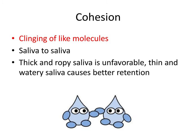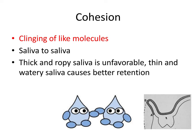The flip side is cohesion — clinging of like molecules together. The mnemonic here: cohesion, clinging, and like all start with consonants. This would be saliva-to-saliva — the water molecules in saliva engaging in cohesion forces. Importantly, thick and ropey saliva is unfavorable, whereas thin and watery saliva causes better retention. The water molecules in saliva cling to one another, creating a continuous undisturbed film layer between the denture and the soft tissues.